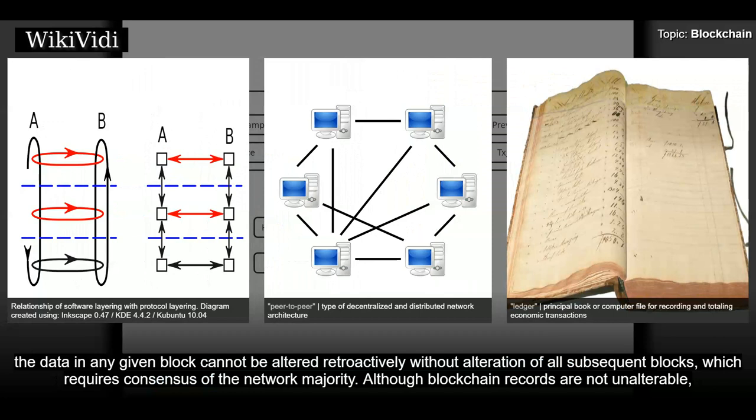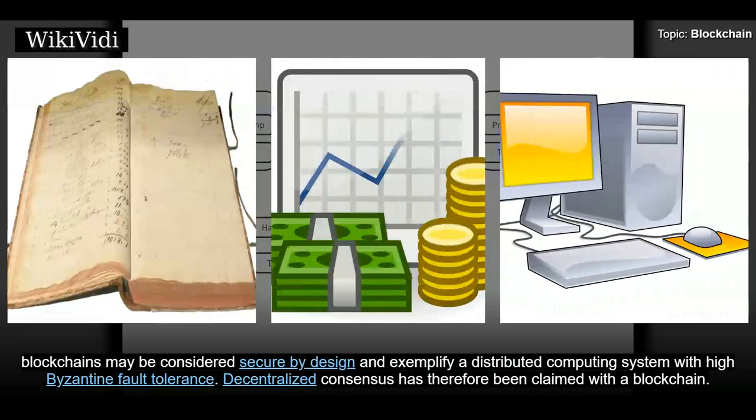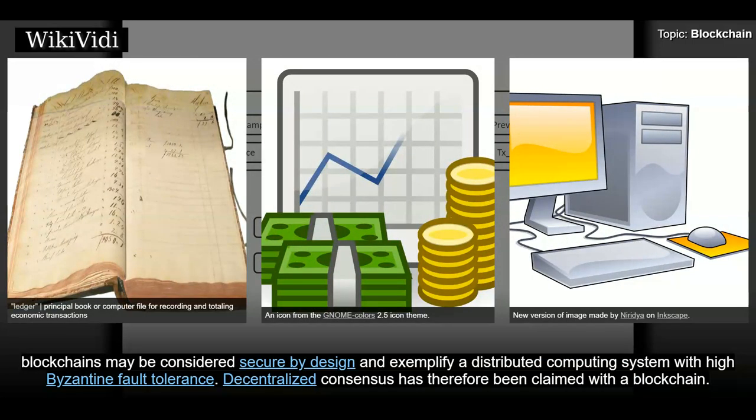Although blockchain records are not unalterable, blockchains may be considered secure by design and exemplify a distributed computing system with high Byzantine fault tolerance. Decentralized consensus has therefore been claimed with a blockchain.